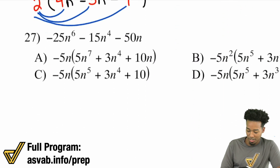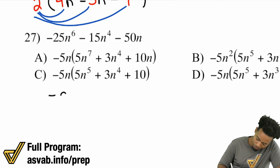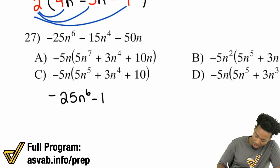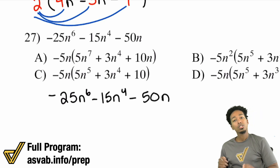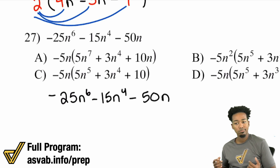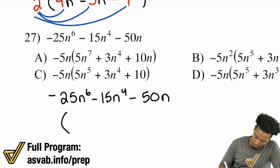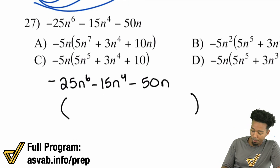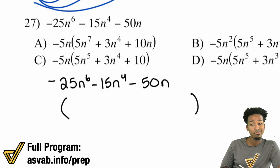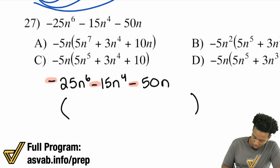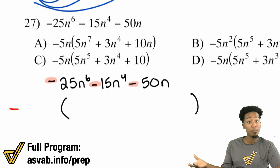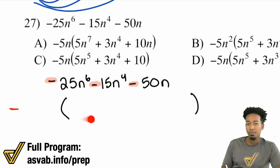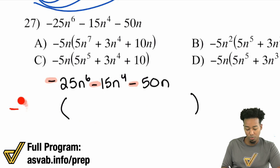Let's keep going through a couple of others. Here we go — number 27. This might look crazy, but it's still going to be just as doable. Write it all out first. Negative 25n to the power of 6, minus 15n to the power of 4, minus 50n. The first thing we'll do here is start off by looking at the numbers. And notice, each of these starts off with a negative. So what can I do? I can actually factor out a negative if I want to — I can factor out a negative 1. So let's factor out that negative. Because if I do that, then they all become positive inside. Take that negative divided by negative — becomes positive.